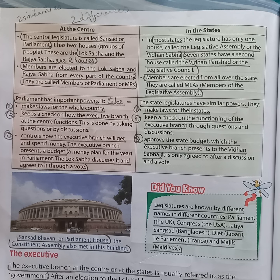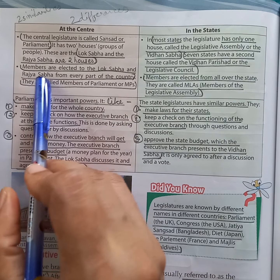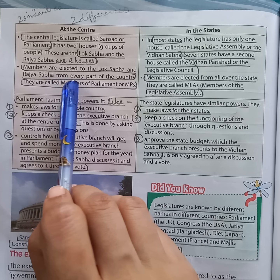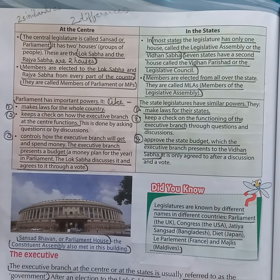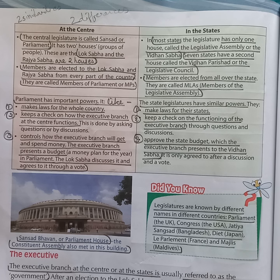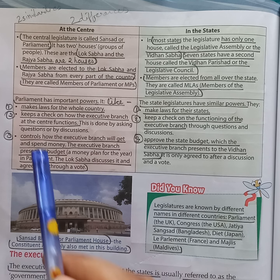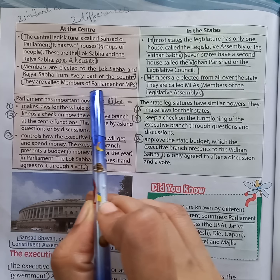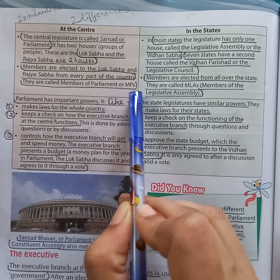Next question: where are the members of Lok Sabha and Rajya Sabha elected from? Answer: members of Lok Sabha and Rajya Sabha are elected from every part of the country. Next question: what are the members of Lok Sabha and Rajya Sabha known as? Answer: the members of Lok Sabha and Rajya Sabha are called Members of Parliament or MPs.